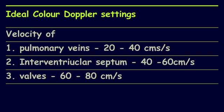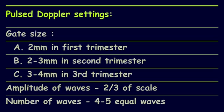Technically, this is achieved by adjusting the PRF. When using pulse wave Doppler, it is important to adjust three parameters: gate size, amplitude of waves, and number of waves. Keep the gate size as 2 mm in the first trimester, 2–3 mm in the second trimester, and 3–4 mm in the third trimester. Adjust the PRF such that the peak of the wave occupies two-thirds of the scale, and ensure that at least four to five equal waves occupy the frame. This is the optimal method for using pulse wave Doppler.